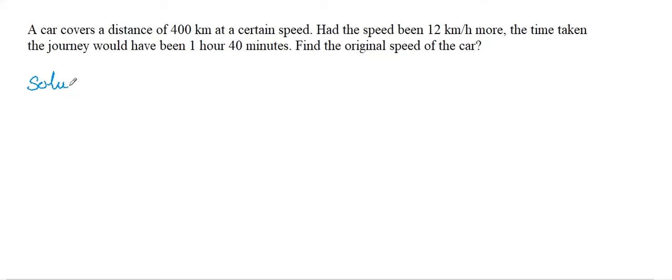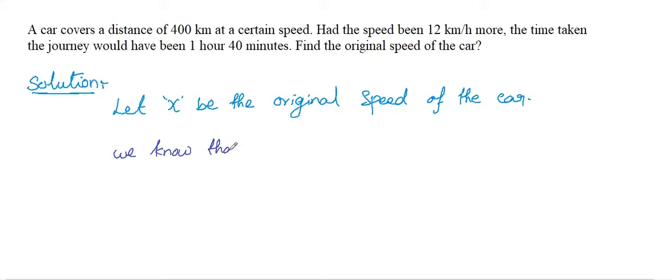Hi guys, welcome to the session. This is Prakash, math tutor. Let's solve the question which I have written on the whiteboard. A car covers a distance of 400 kilometers at a certain speed. Had the speed been increased by 12 kilometers per hour, the time taken for the journey would be 1 hour 40 minutes less.